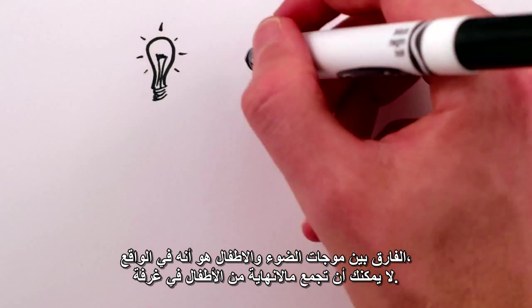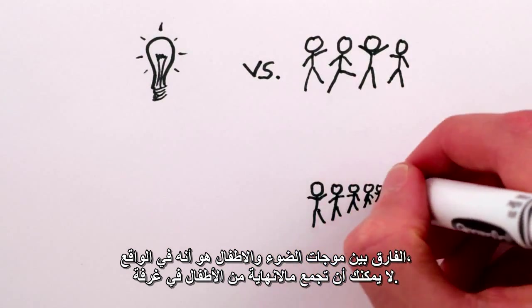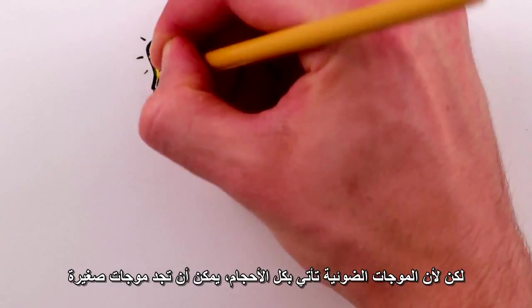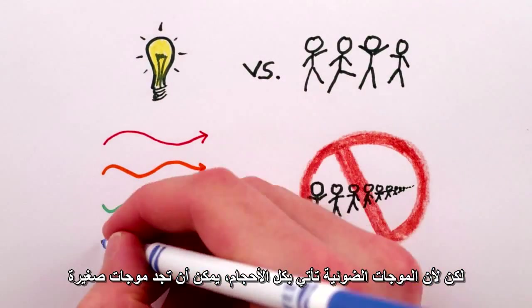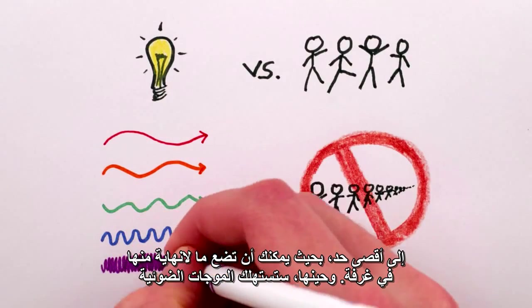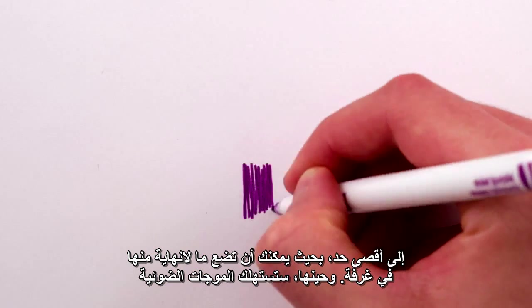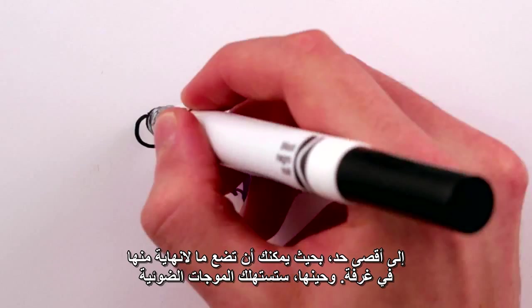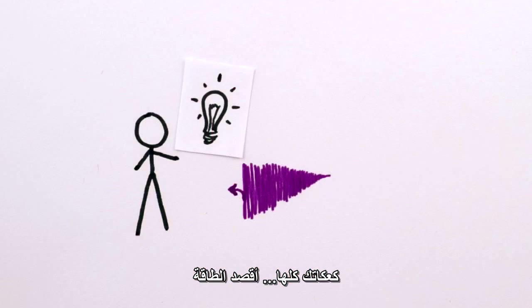The difference between light waves and kids is that you can't actually have infinitely many kids in a room. But because light waves come in all sizes, you can have arbitrarily small light waves, so you can fit infinitely many into a room. And then the light waves would consume all your cookies — I mean, energy.